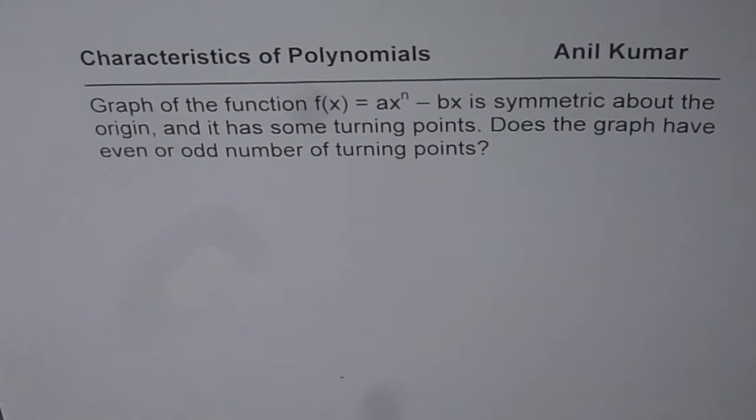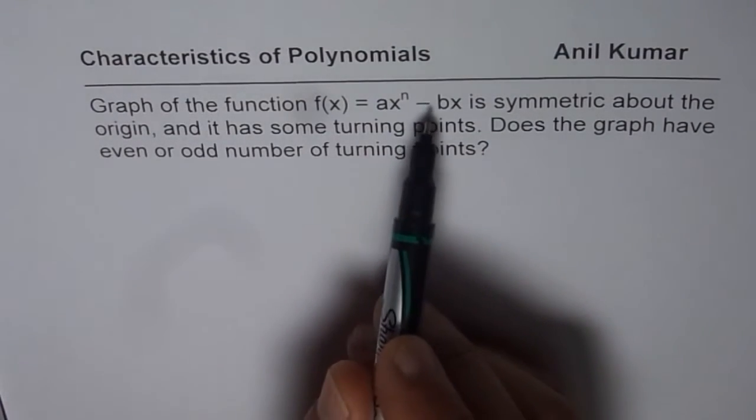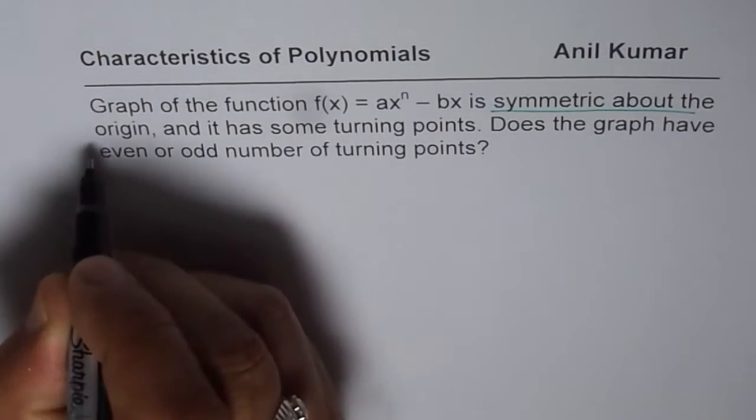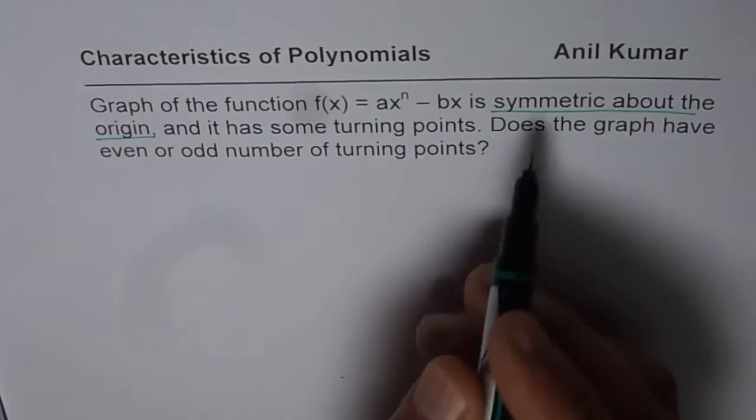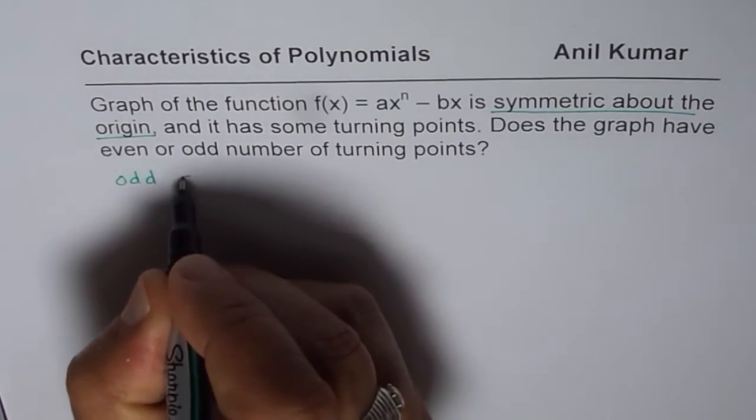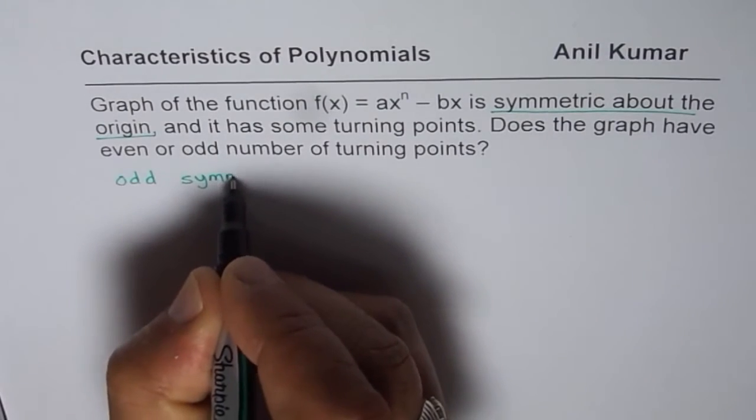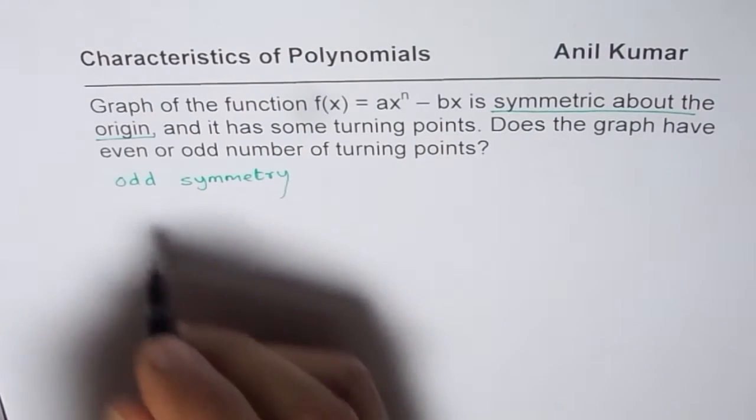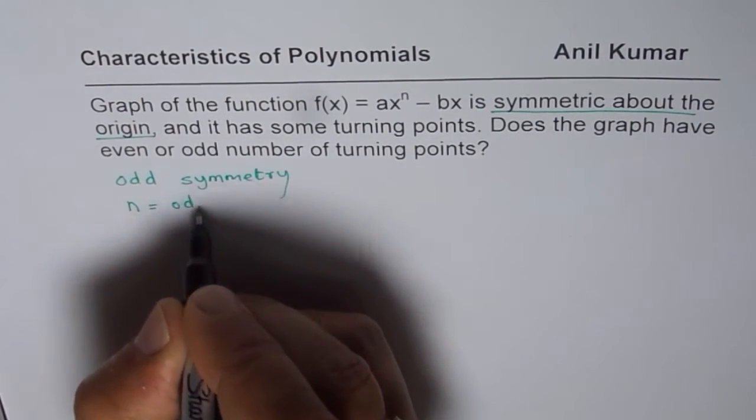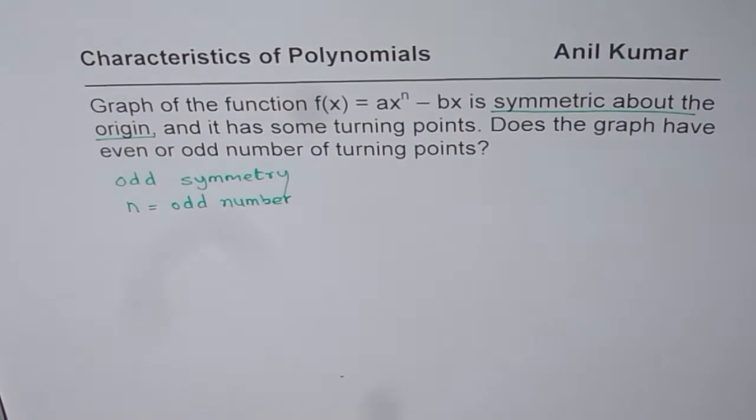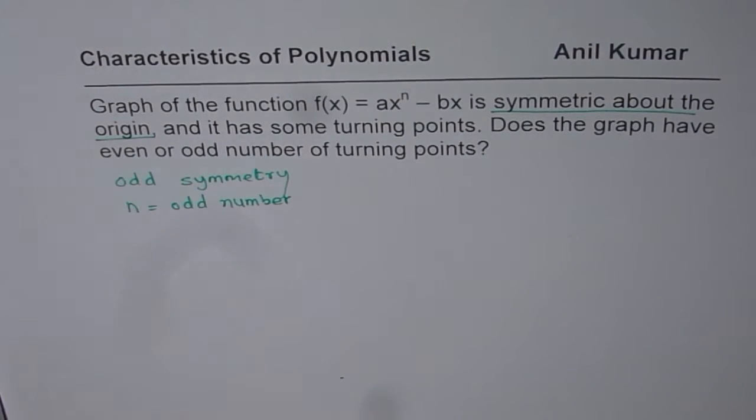Let us first try to understand the question itself. It says graph of this function is symmetric about origin. If it is symmetric about origin, that means it has odd symmetry. Since it has odd symmetry and this kind of a function, we know n is odd number, an odd positive number.